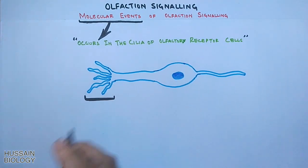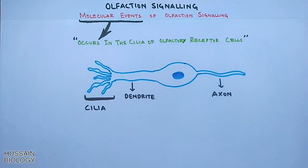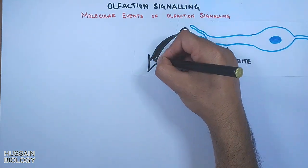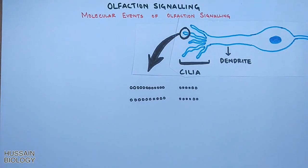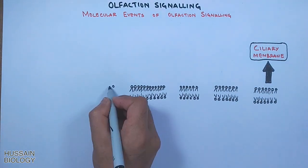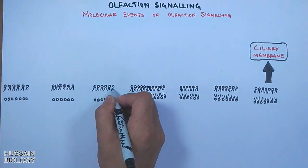The olfactory receptor cell has cilia, dendrite, and axon, and it's in the cilia where olfactory signaling occurs. If we zoom into it, it is the ciliary membrane where all the events occur. In the ciliary membrane we have various components.